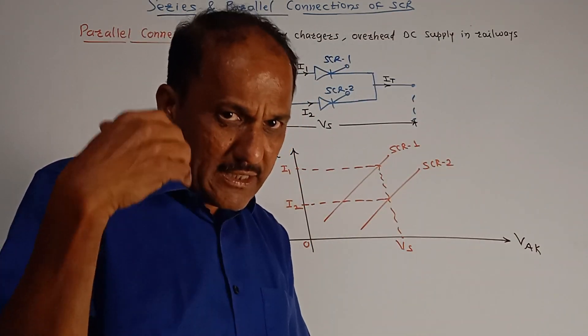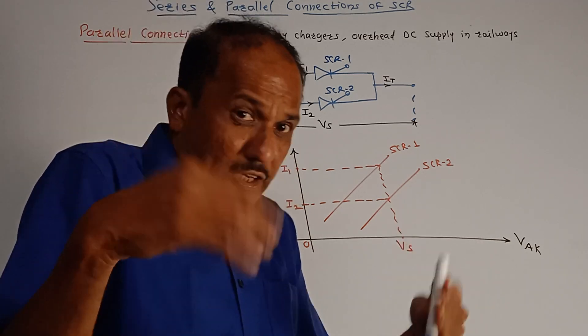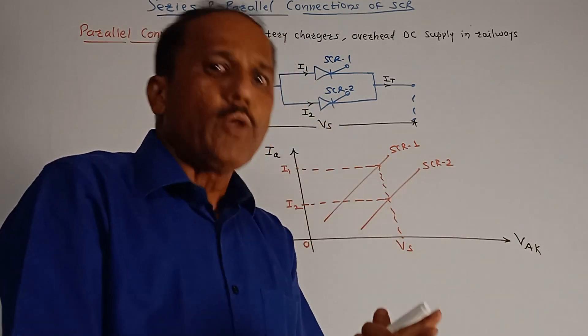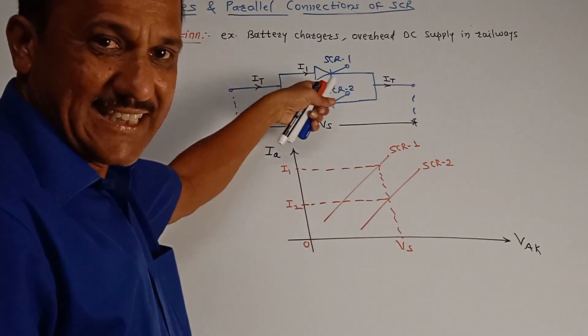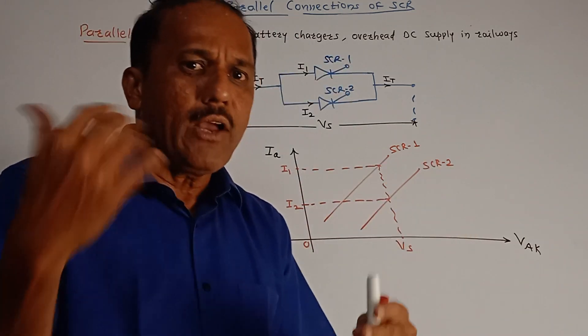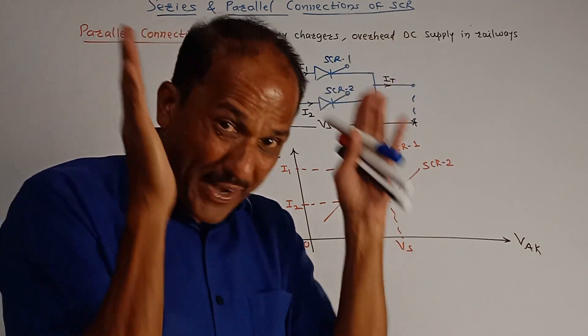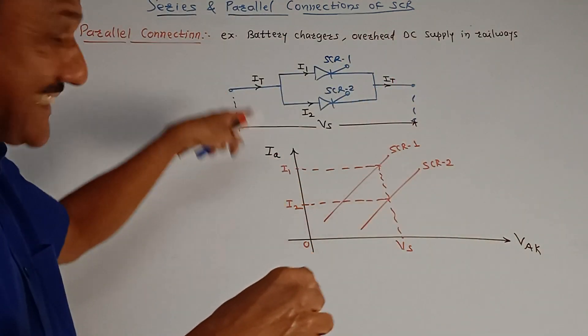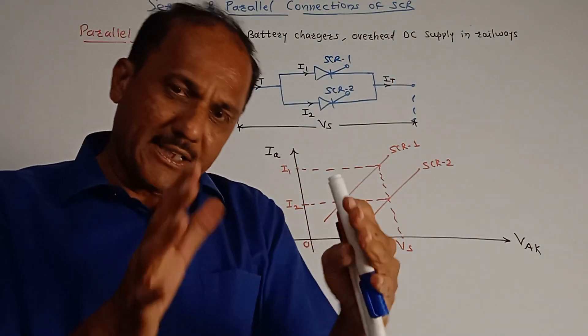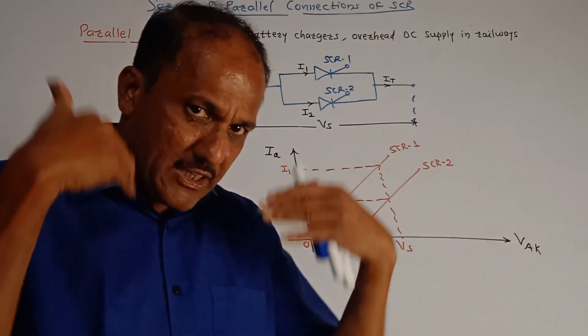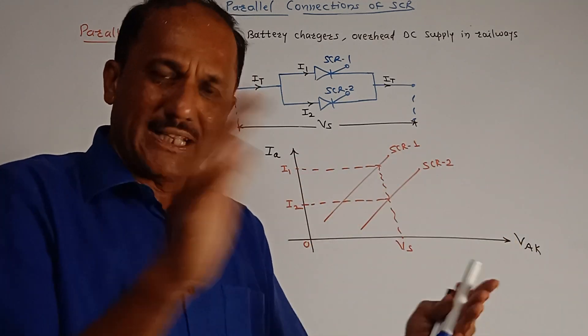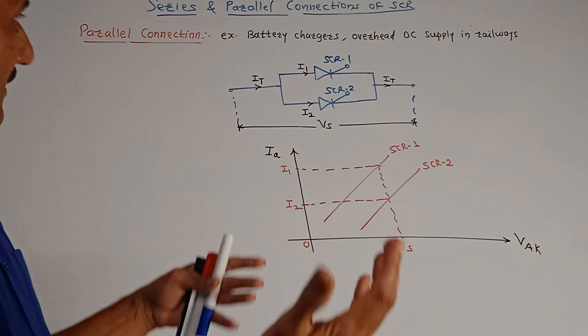As the temperature increases, it may exceed the allowed permissible temperature. So it may damage the SCR. Likewise, the SCR may go on damaging. So to avoid such problems, a common heatsink is used that will ultimately limit the increase in the junction temperature of SCR and it will protect the SCR.